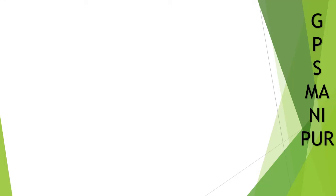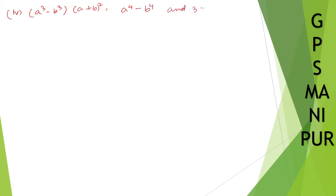Now we are doing exercise 2.4, question number 3, roman number 4. The question is: first polynomial is a cube minus b cube times (a plus b) whole square; second is a to the power 4 minus b to the power 4; and third is 3a to the power 4 plus 2a cube b minus 5a square b square. Solution: